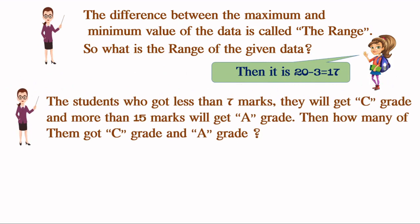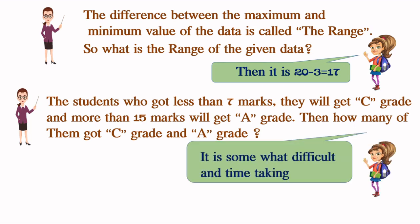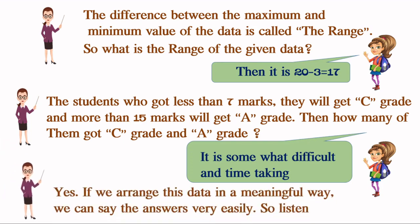The students who got less than 7 marks will get C grade and more than 15 marks will get A grade. How many of them got C grade and A grade? By observing the raw marks, it is somewhat difficult and time-taking. If we arrange this data in a meaningful way, we can get the answer very easily.